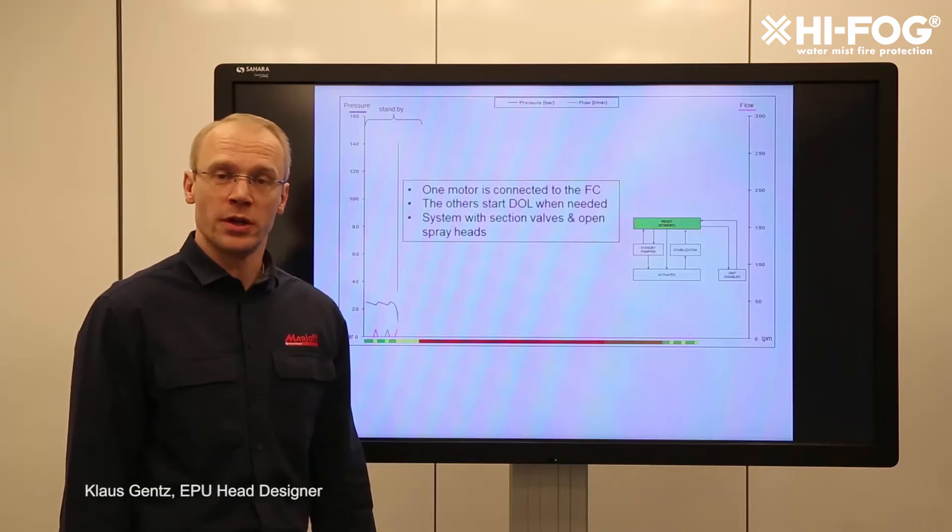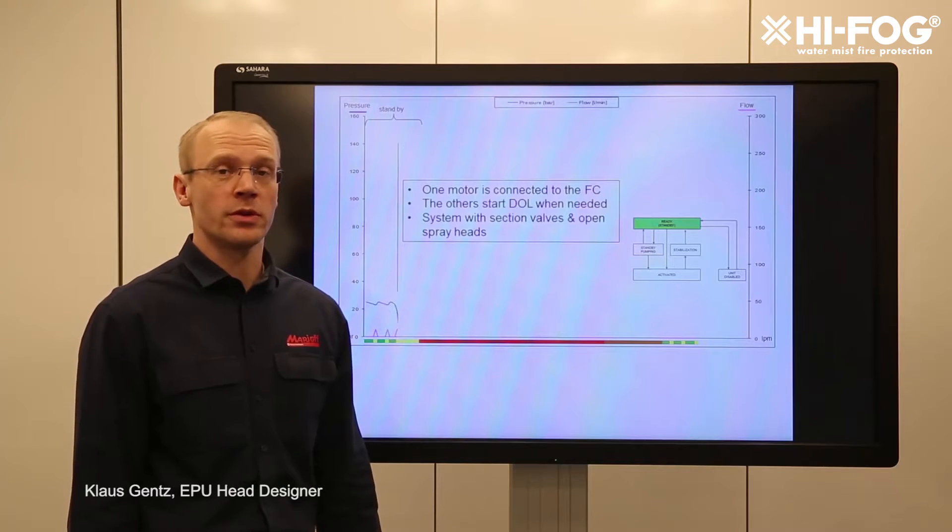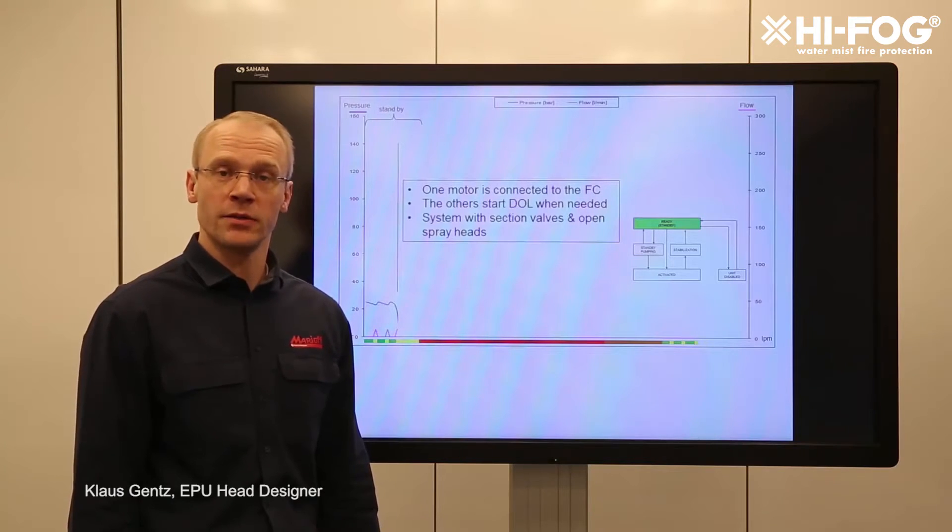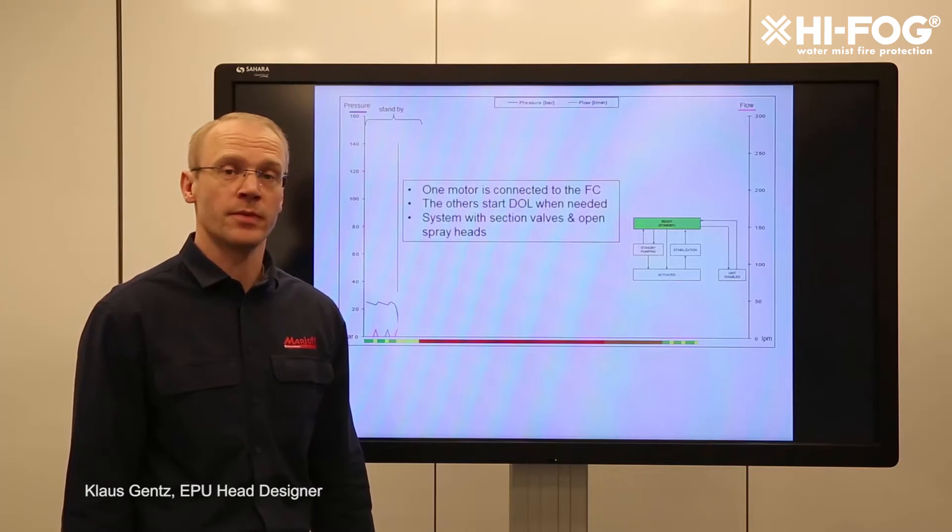We have one of the motors connected to a frequency converter and we can run this motor at any speed we like. We utilize this both in standby pumping and in fine tuning of the pressure. The other motors will all start direct online. This means that once they are started they run on full speed and we start these direct online motors only as many as we need.